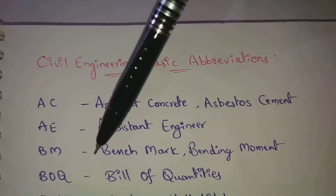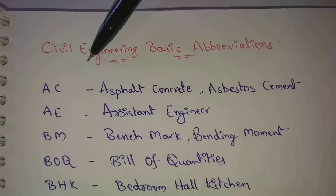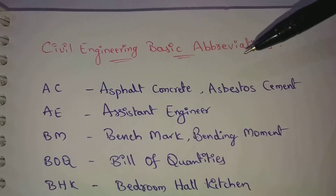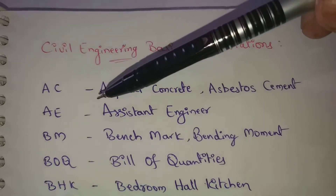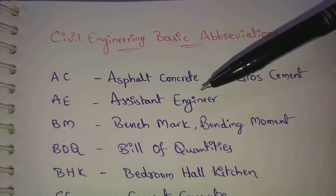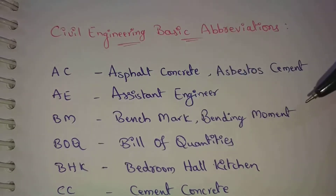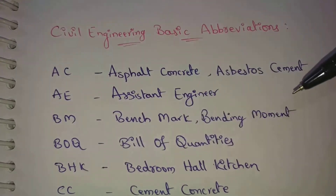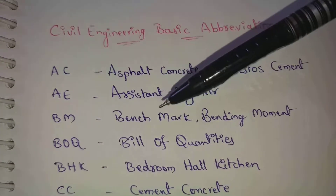These are the main abbreviations used on site. First, AC — AC means asphalt concrete, and also AC means asbestos cement. Next, AE — AE means assistant engineer. Next, BM — BM means benchmark and also bending moment. Benchmark is used in surveying; bending moment is used in strength of materials.